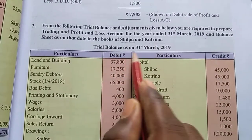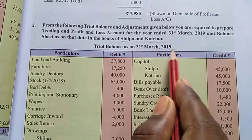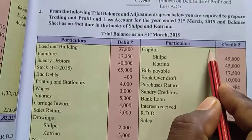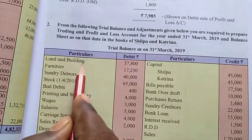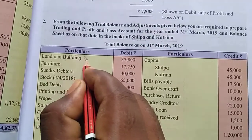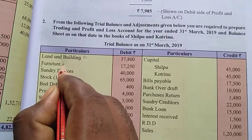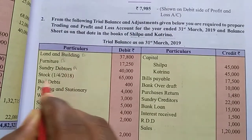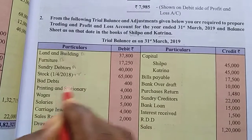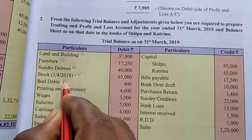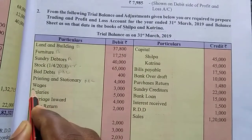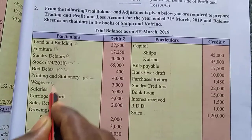This is the given trial balance as on 31st March 2019. This is the debit balance, this is the credit balance. Land and building comes in asset, furniture asset, generator asset, stock goes to trading account, bad debts to profit and loss account, printing and stationery to profit and loss account, wages to trading account.